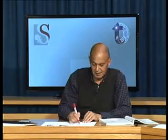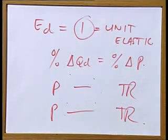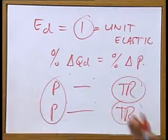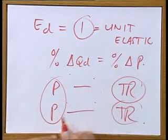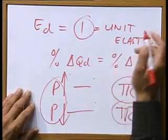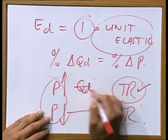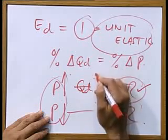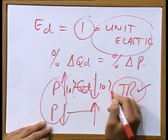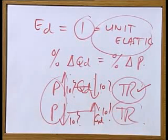What happens with total revenue when the price changes and demand is unit elastic? If the government or a business wants to change prices to increase or decrease their total revenue — whether they increase the price by 10% or decrease the price by 10% — according to this type of elasticity, there will be no effect on total revenue. The quantity demanded will change by the same percentage: if the price goes down by 10%, quantity demanded will increase by 10%.